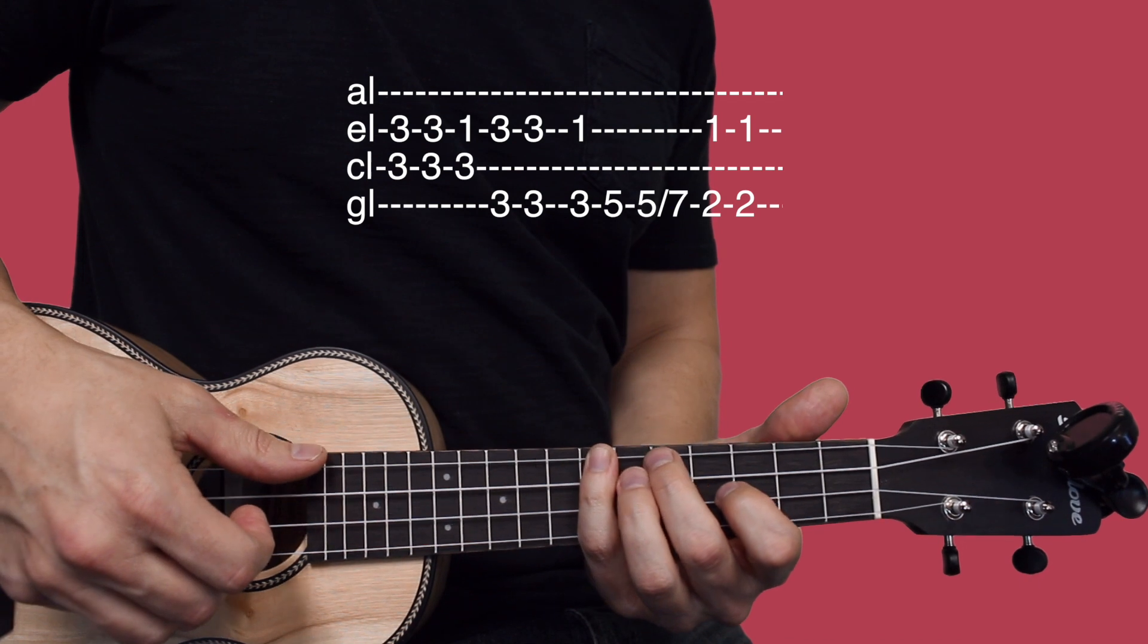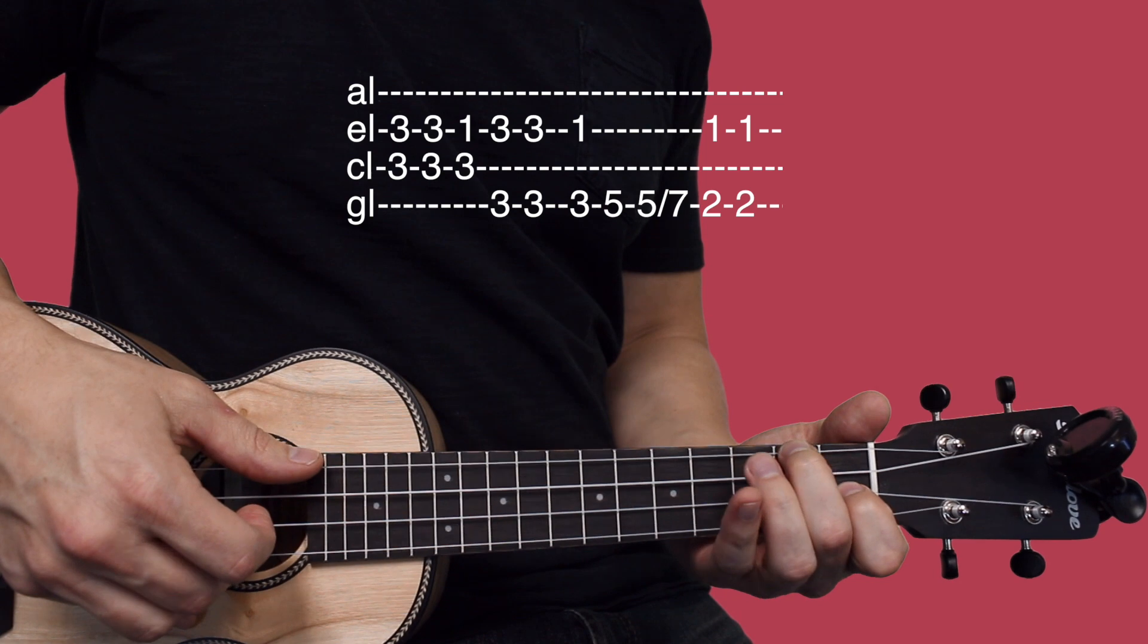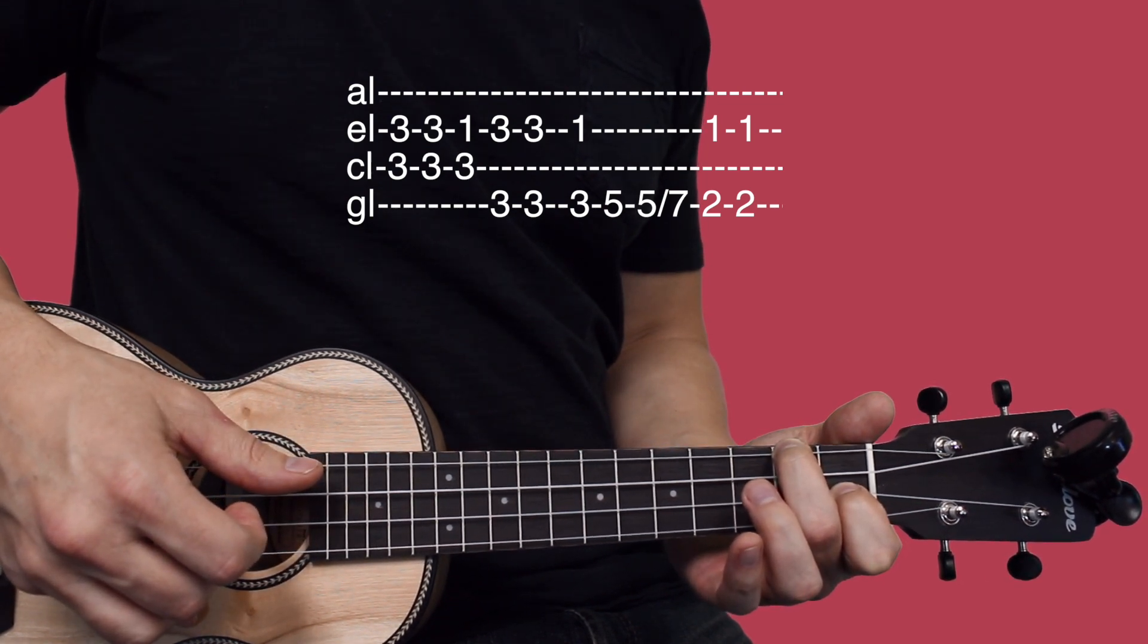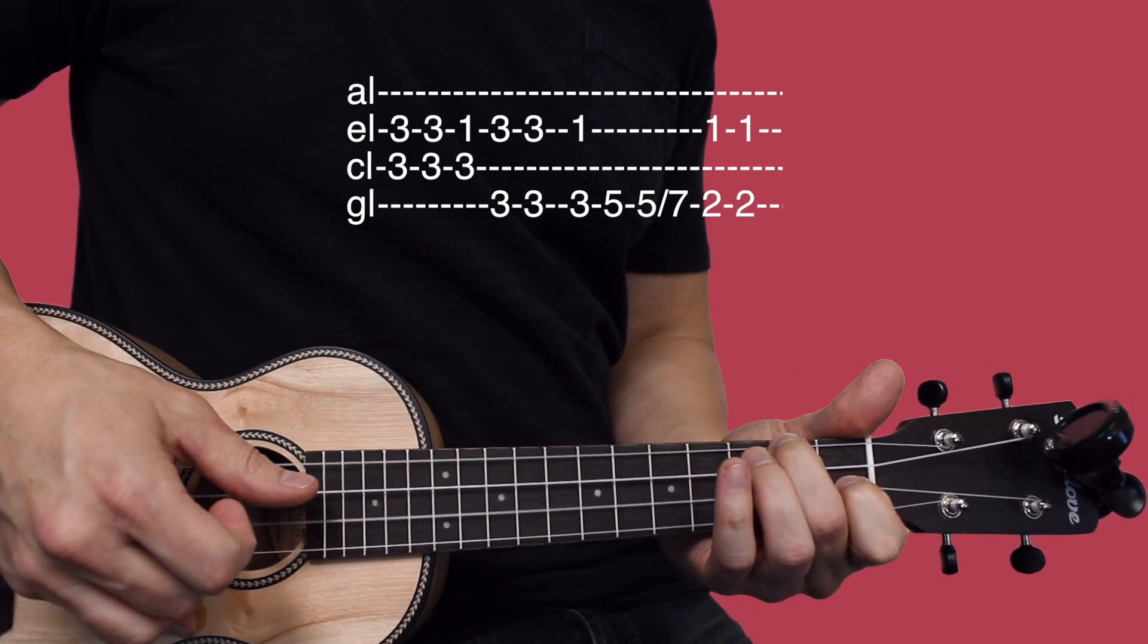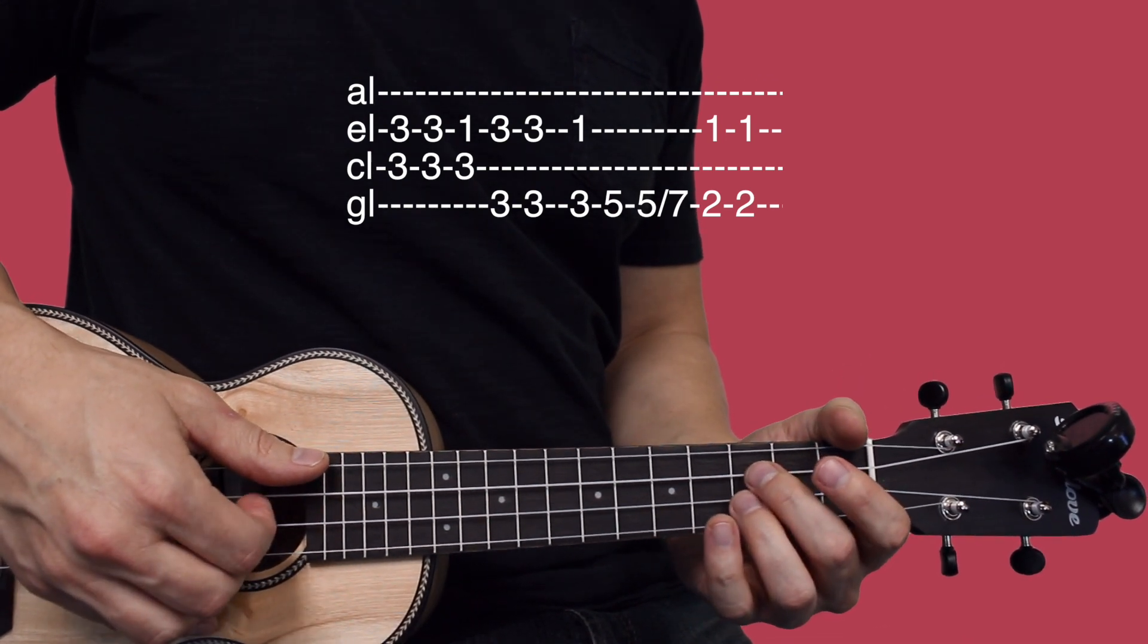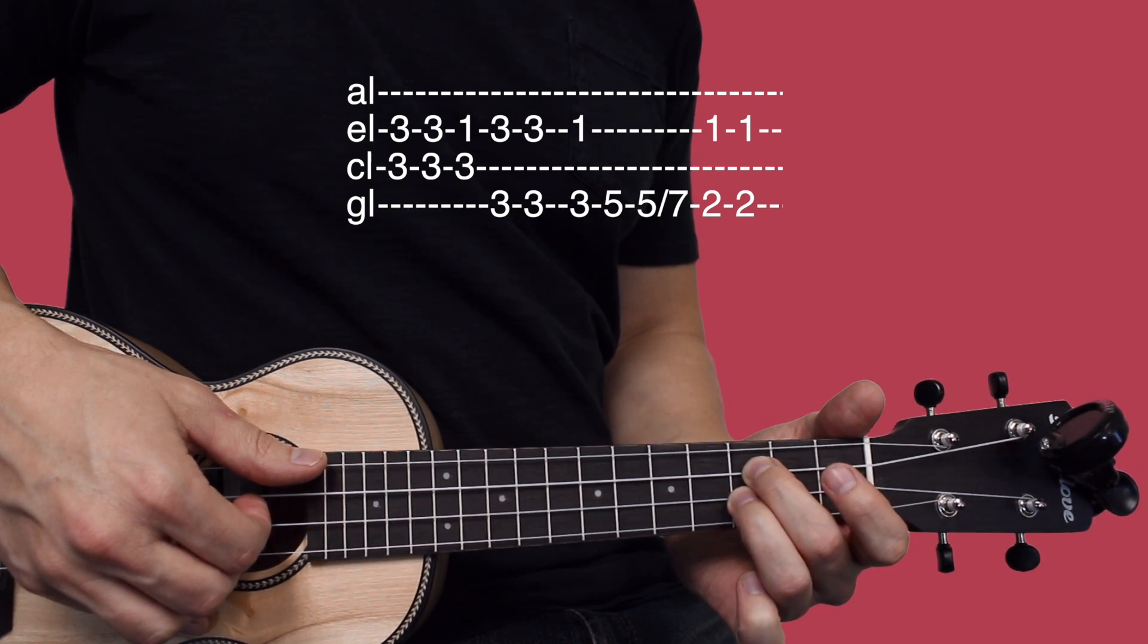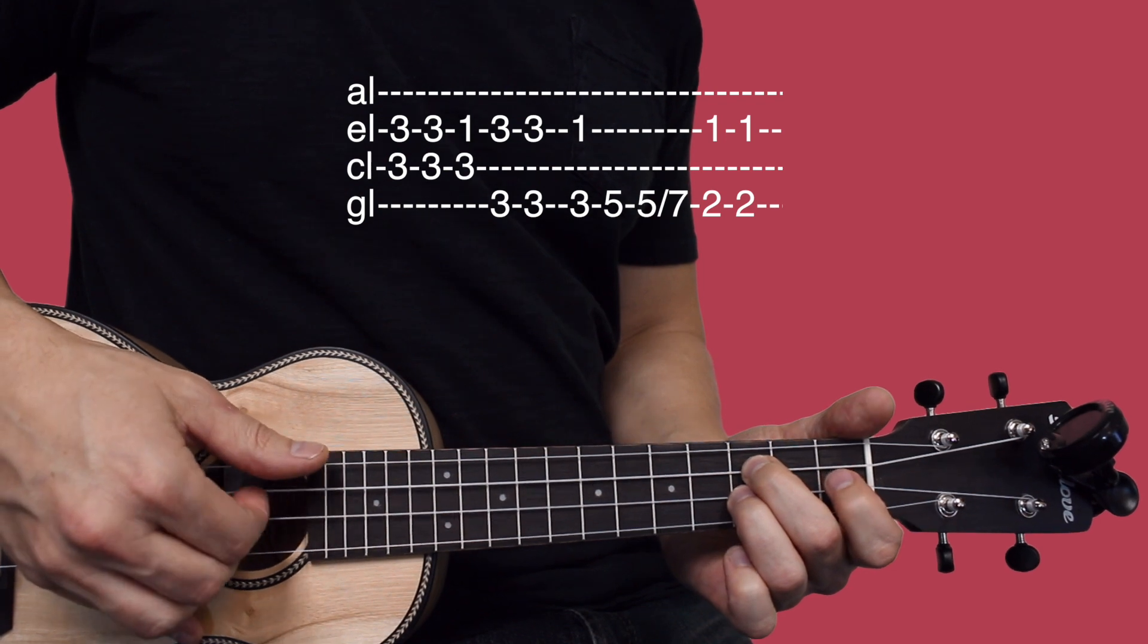Alright, and then the final chord: index finger on the first fret of the second string, middle finger on the second fret of the fourth string. So let's take a look at it and try to play through it slow a couple times, starting on that first chord—middle finger third fret of third string, ring finger third fret of second string.